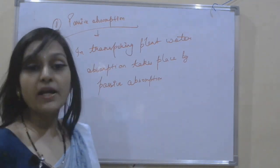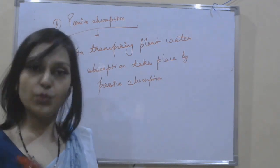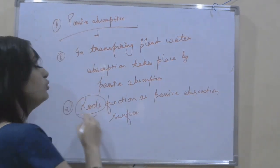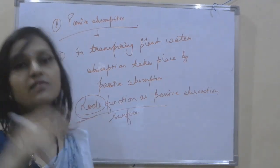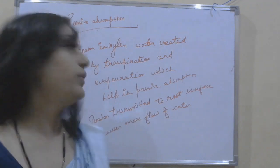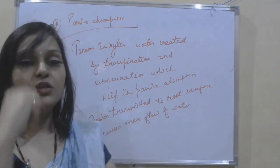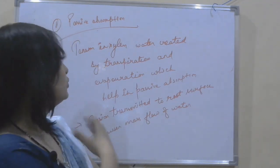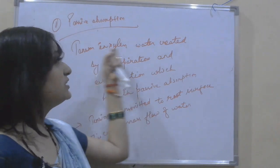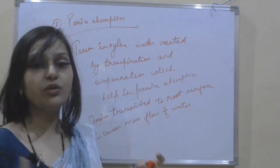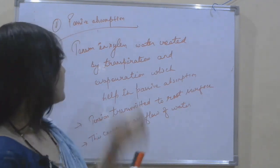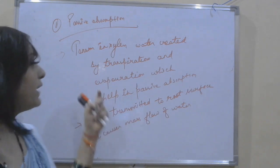In transpiring plants, passive absorption mostly occurs. Roots function as a passive absorption surface. Tension is created in the xylem water. Xylem is responsible for conducting water. A tension is created in the xylem by transpiration, which drives passive water absorption.